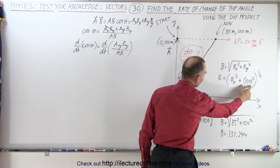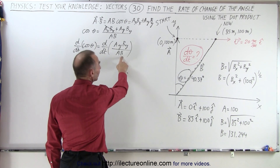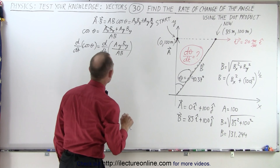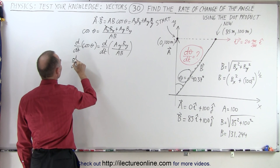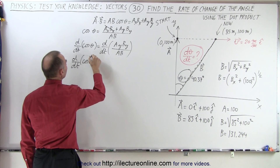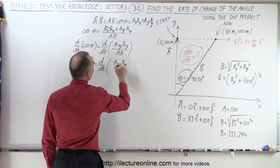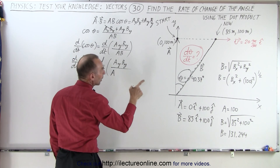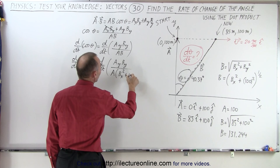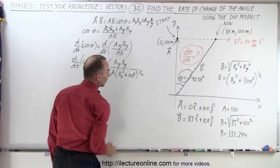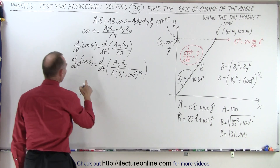B will change over time because B is equal to the square root of B sub X squared plus B sub Y squared. Now B sub Y is constant, but B sub X is not — that changes. So what we're going to do is we're going to replace the magnitude of B with what the magnitude of B is equal to. So the d/dt of the left side, which is the cosine of theta, is equal to the d/dt of AY BY, which are both constants, and the denominator A, which is a constant, but B is going to be the square root of B sub X squared plus 100 squared. And that is a variable.